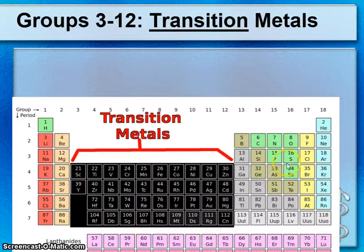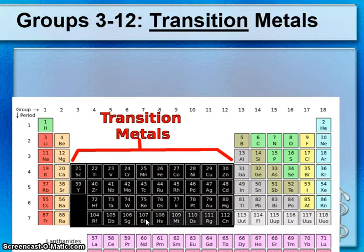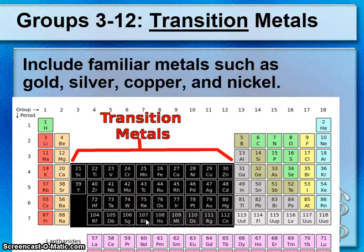Groups 3 to 12 are the transition metals — a large portion of the periodic table. They include familiar metals such as gold, silver, copper, nickel, mercury, and tin. These are very important metals.